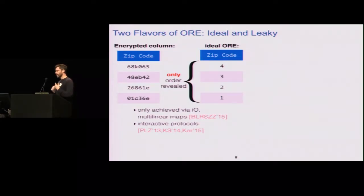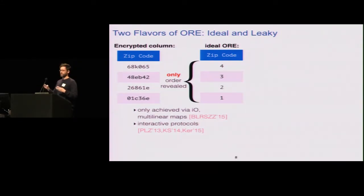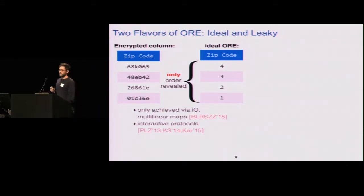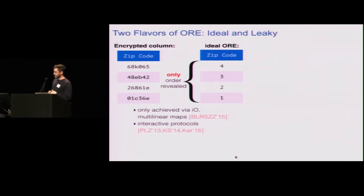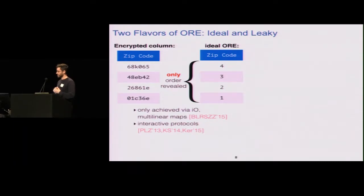If you relax the notion and say you just want to do range queries with some leakage and allow an interactive protocol, then you can get fast implementations that work okay, but they're interactive and you have to change the server. I'll still consider ideal ORE a valid thing to analyze because it could be used in practice with these interactive protocols.